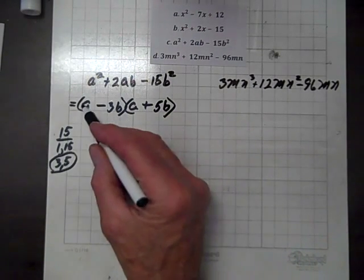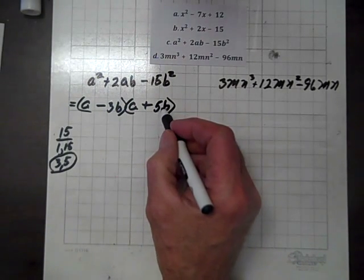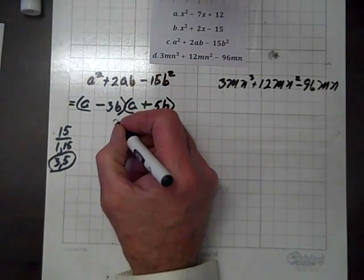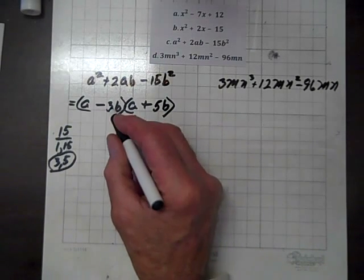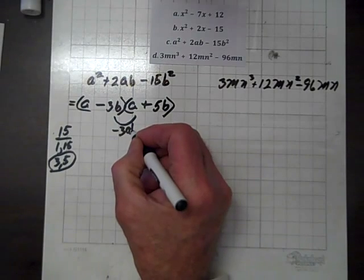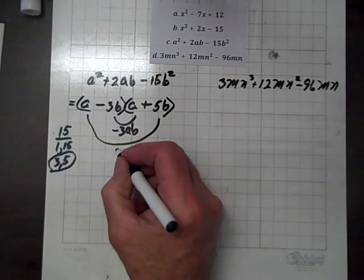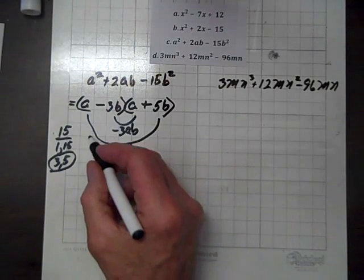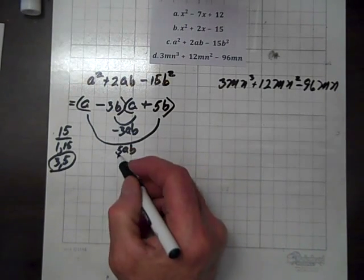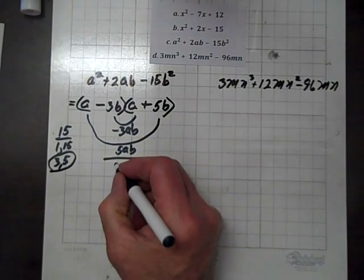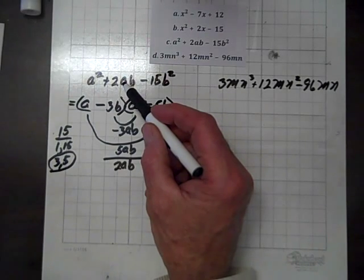Now let's try this out. a times a is a². Negative 3b times positive 5b is negative 15b². Now for the middle term, if we multiply the two inside terms, we get negative 3ab. If we multiply the two outside terms, we get 5ab. And if we sum these, in other words, it's going to be a difference because the signs are opposite, we're going to get 2ab. And we've got a match. Notice our middle term here is 2ab.